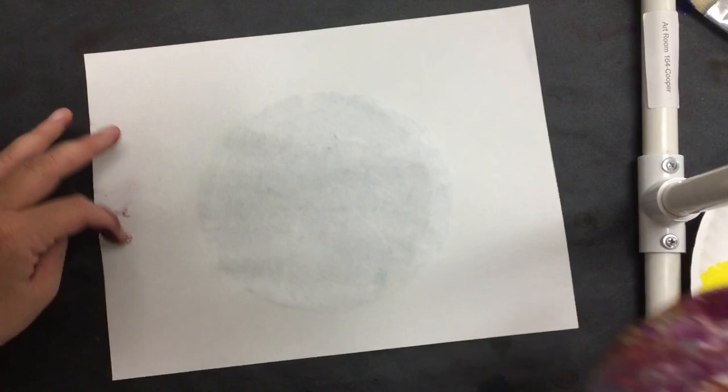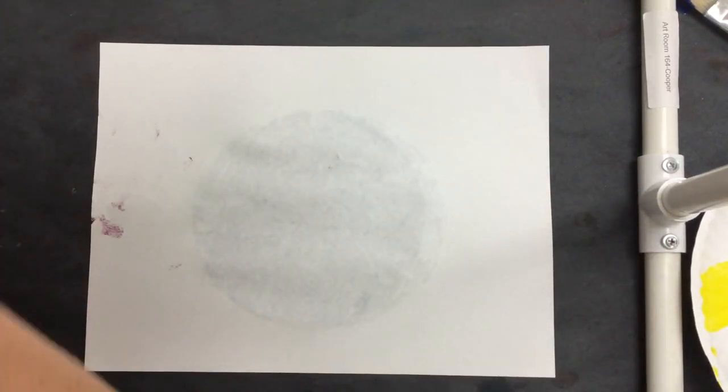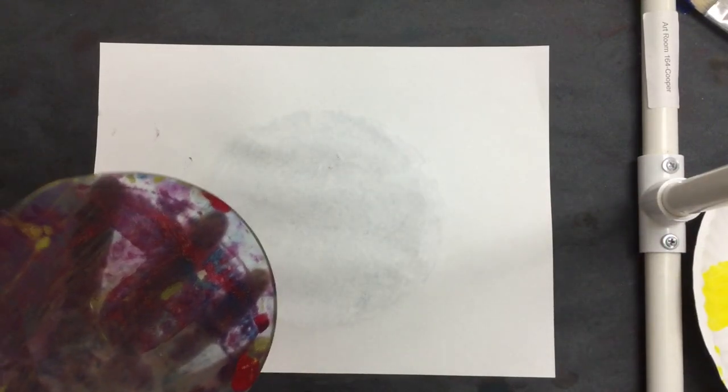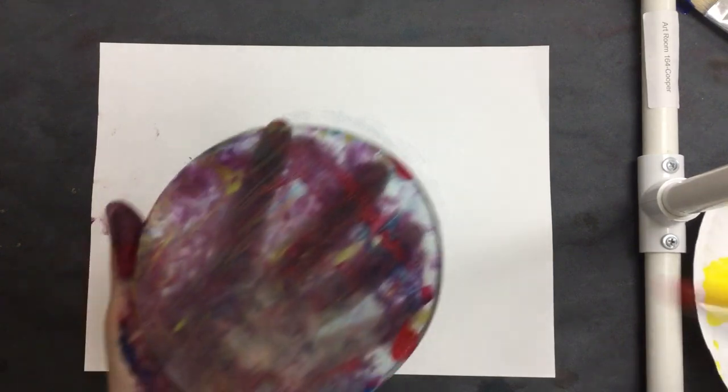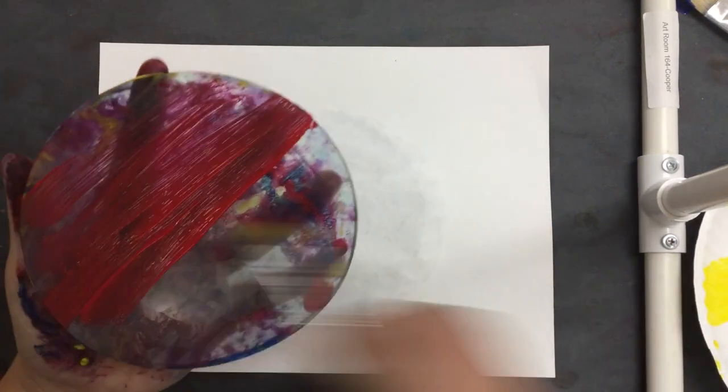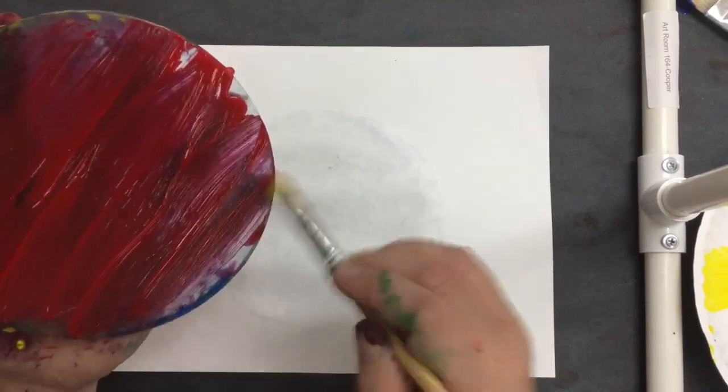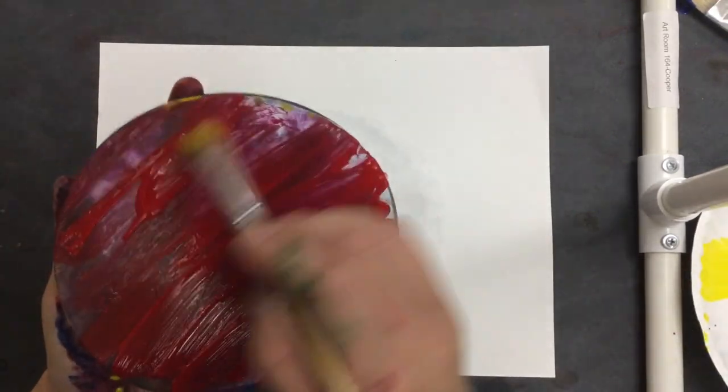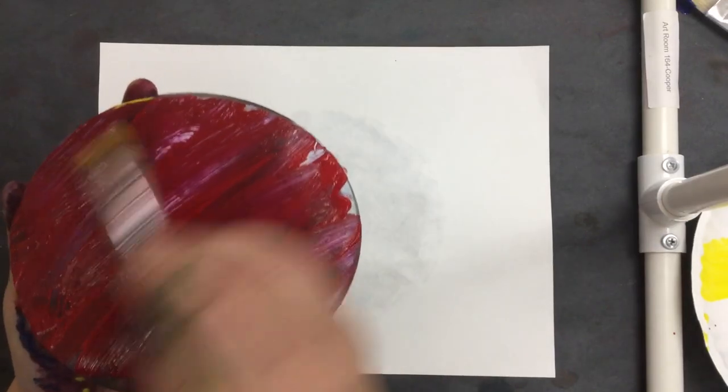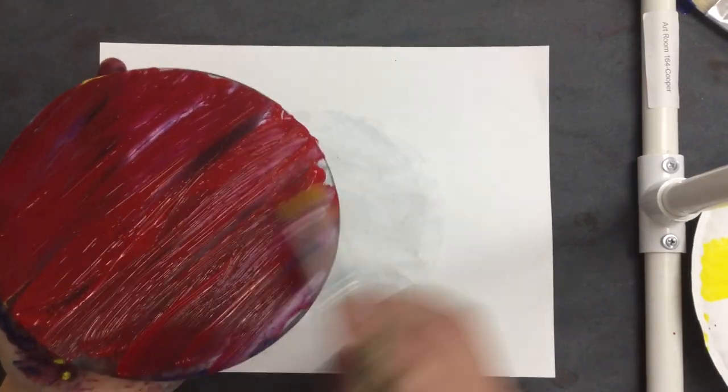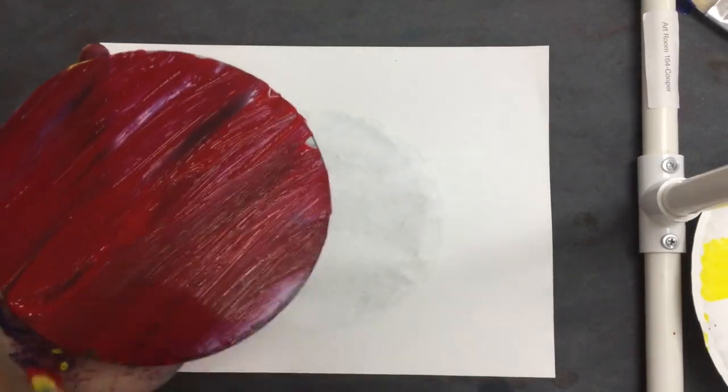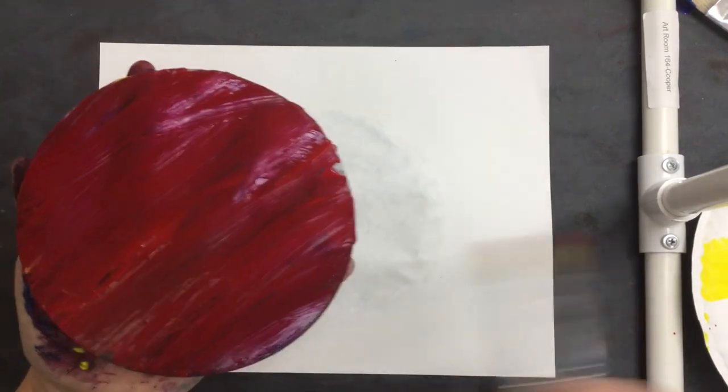Another fun thing to do with jelly prints - what I'm gonna do this time is a reduction print, where I'm putting all my paints on my jelly plate but I'm gonna put something to reduce the amount of paint that goes on the paper, which means I'm going to block it from getting to the paper.